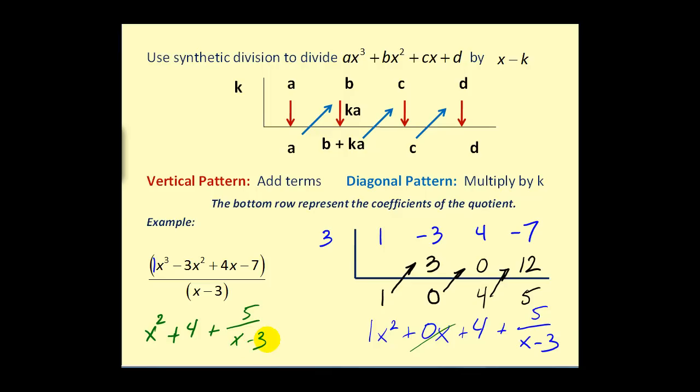We would write this as x squared plus four plus five over x minus three. This is a very nice way to divide by a binomial as long as it fits the form required for synthetic division — you can see it's much faster than performing long division.